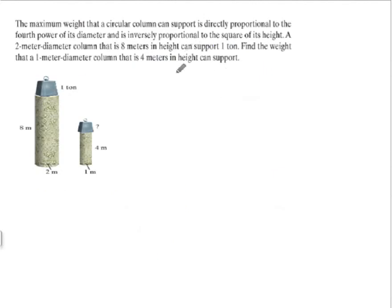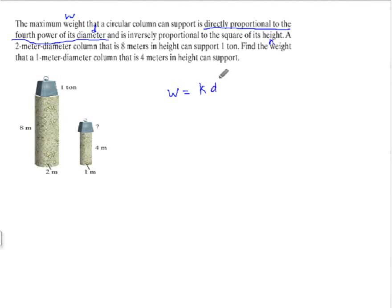And finally, we have a combined variation. The maximum weight that a circular column can support is directly proportional to the fourth power of its diameter and inversely proportional to the square of its height. So let's call maximum weight w, diameter d, and height h. The maximum weight w is directly proportional, so that's k times d to the fourth.